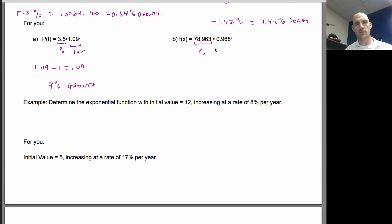On this one. Again, P sub 0 is here. This one is 1 plus R. And so if I subtract 0.968 minus 1, I get that that's equal to negative 0.032, which would be 3.2 percent decay. So those are the two answers to those. That's what you should have got.